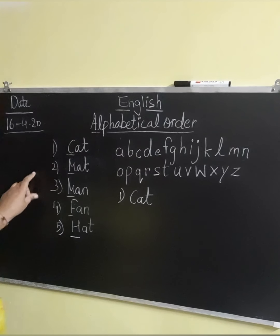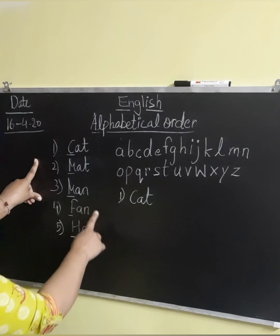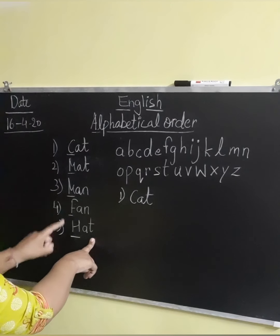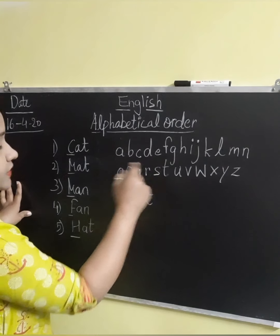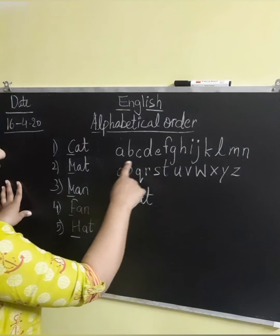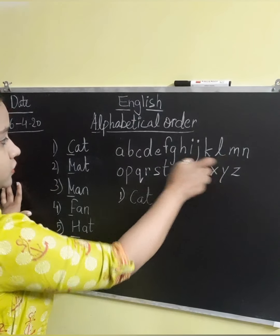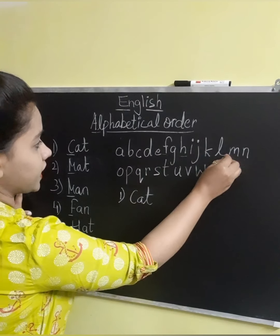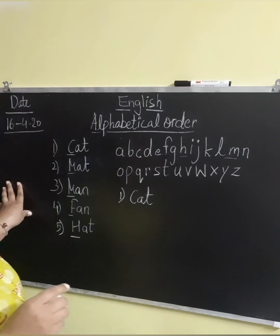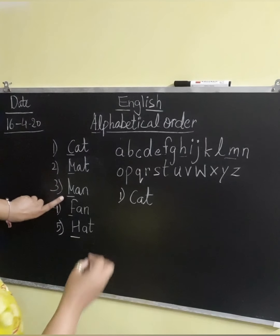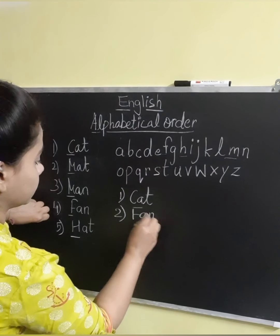We are supposed to now find out the second word. So let's see: mat, man, fan, and hat. So the initial letters are F, H, M, M. Which letter comes first in the alphabets? F, H, M — so which letter is coming first? It's F. So we are going to write fan on the second number. Fan.